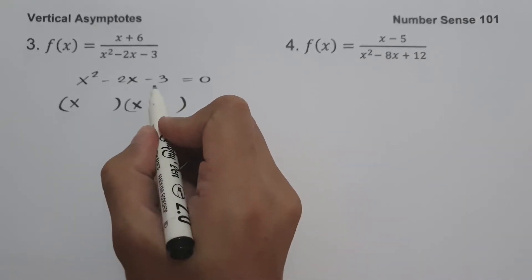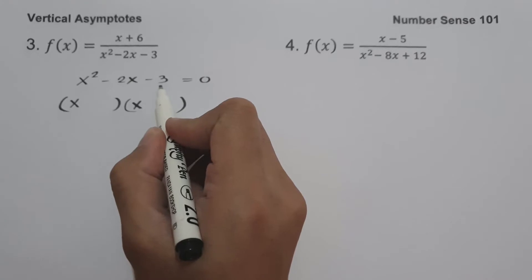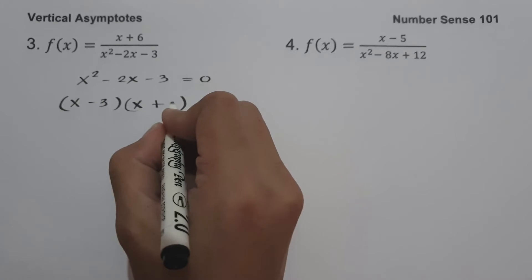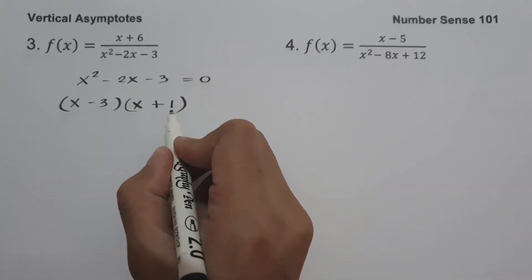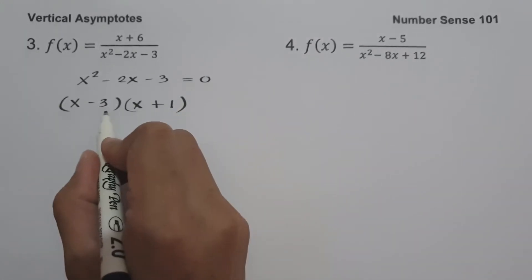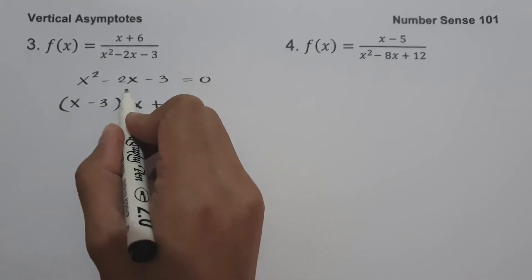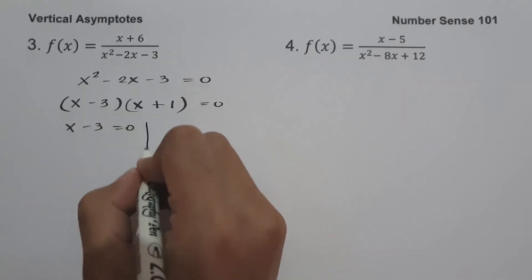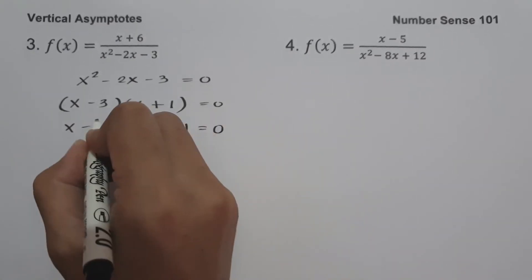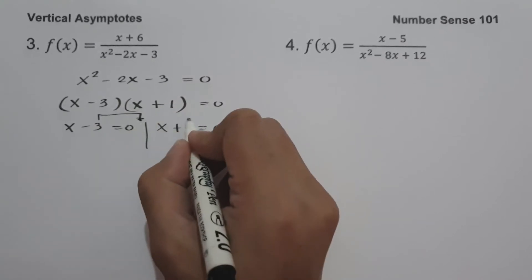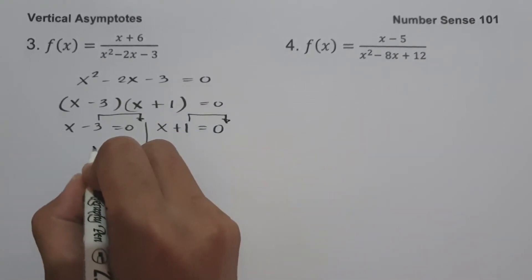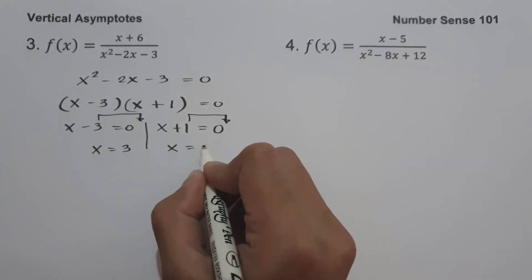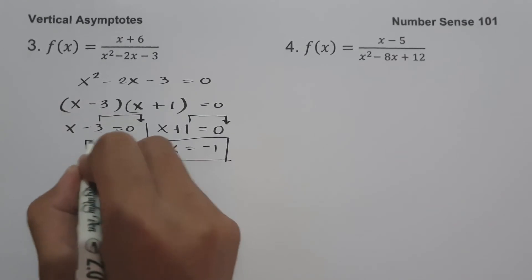What are the two numbers? If we multiply, we can get negative 3, and if we add, we can get negative 2. That is negative 3 and positive 1. Negative 3 multiplied by positive 1 is negative 3, and negative 3 plus 1 is negative 2. So let us equate x minus 3 equal to 0 and x plus 1 equal to 0. Moving the constants to the other side gives us x equals 3 and x equals negative 1. So these will be our vertical asymptotes.